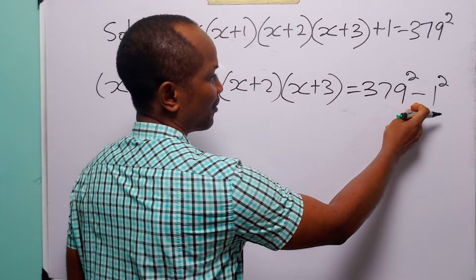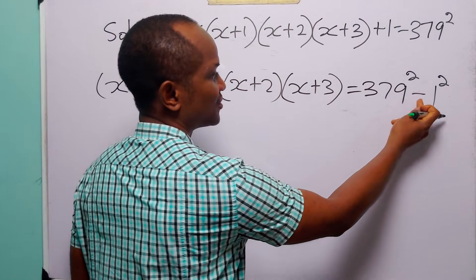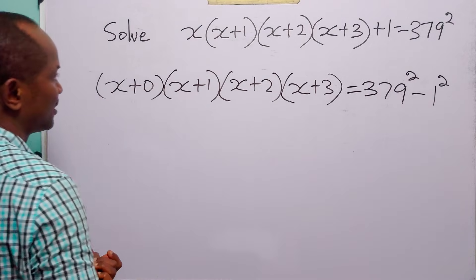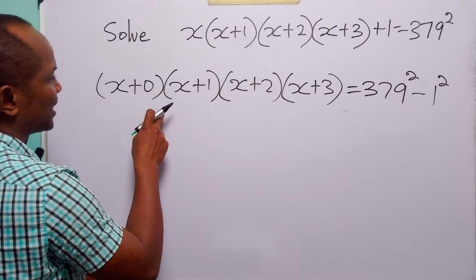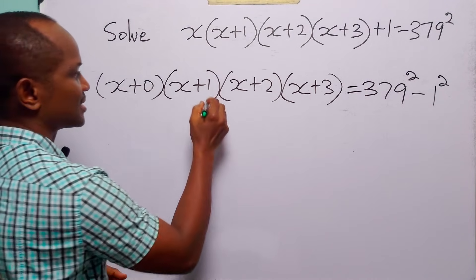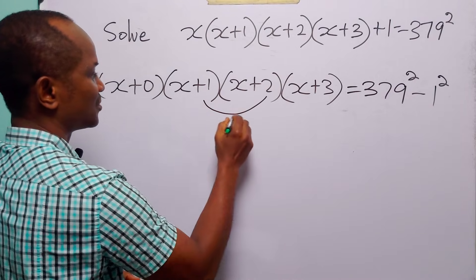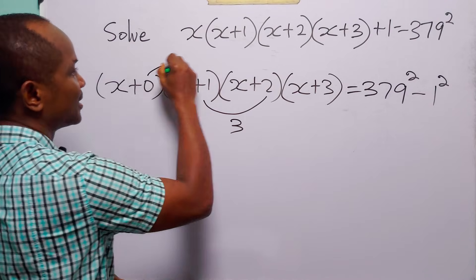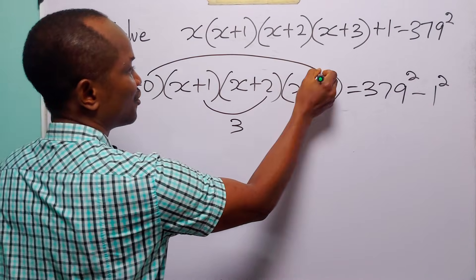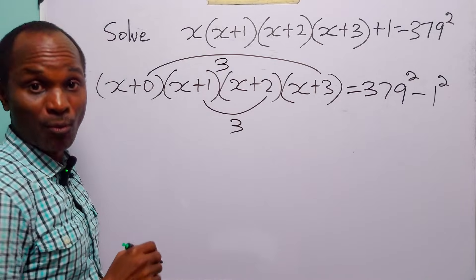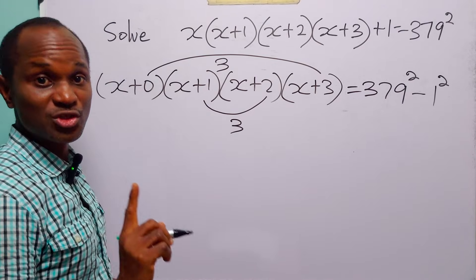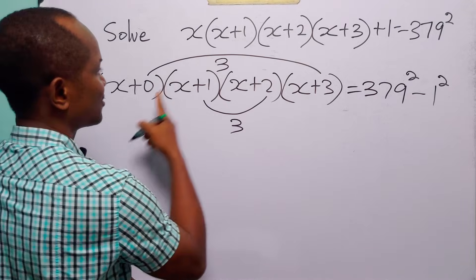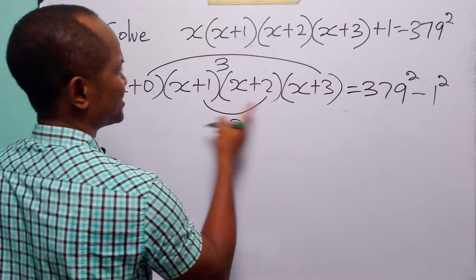Now written in this form, you are going to see the difference of 2 squares. On the left hand side, notice that 1 plus 2 is equal to 3, while 0 plus 3 is also equal to 3. So we are going to use symmetry to our advantage. Let us reorder these brackets.